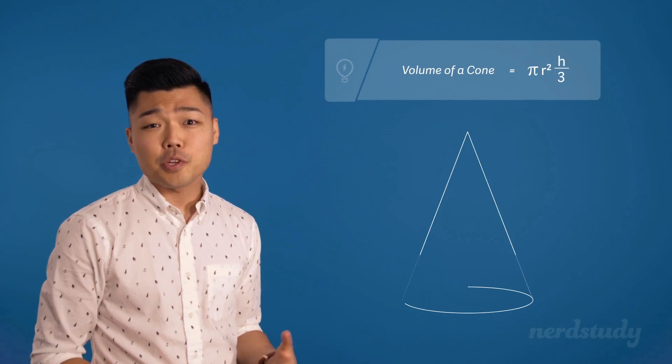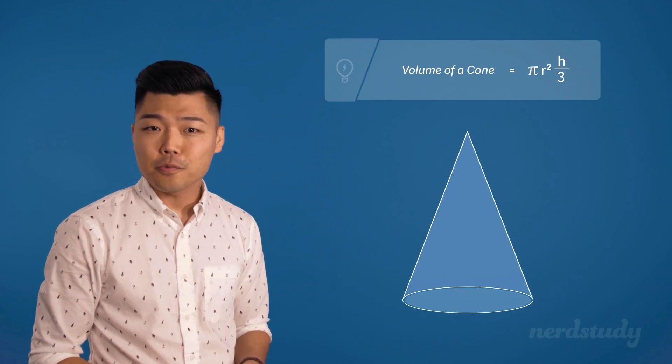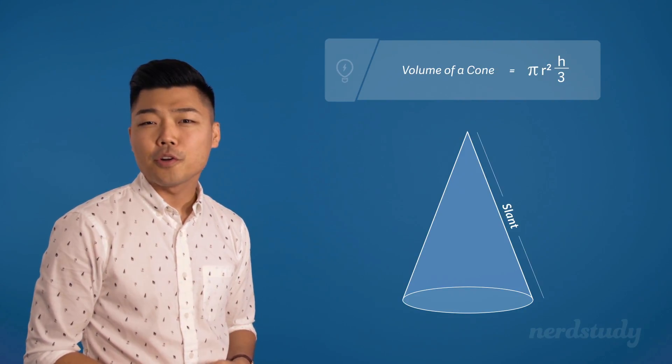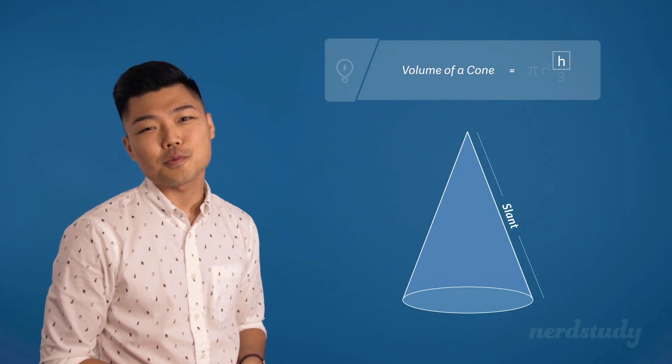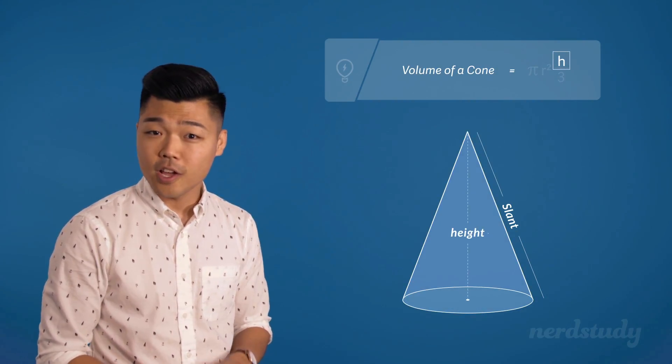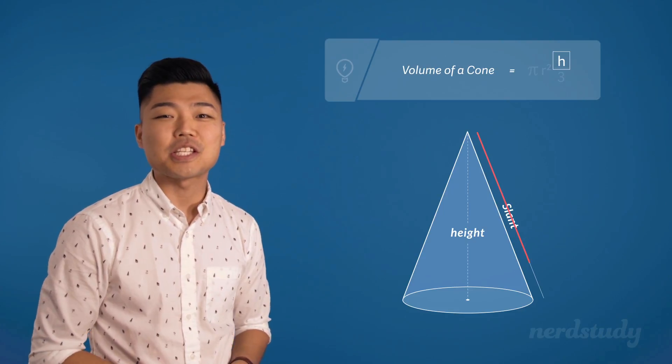So the volume of a cone is equal to pi times r squared times h over 3. Whereas when you're finding the surface area of the cone, you're looking for the slant height, when you're looking for the volume of a cone, this h over here is referring to the actual height of the cone.